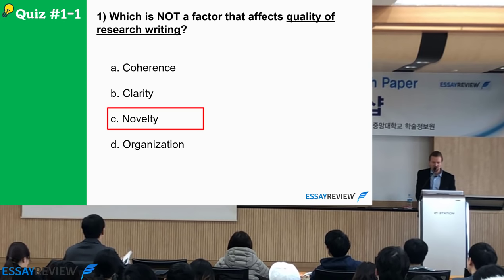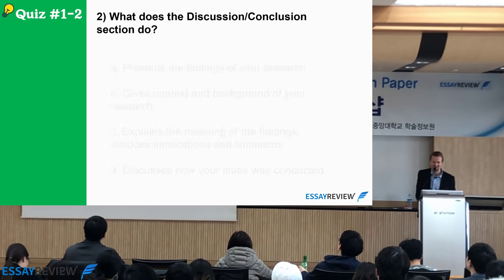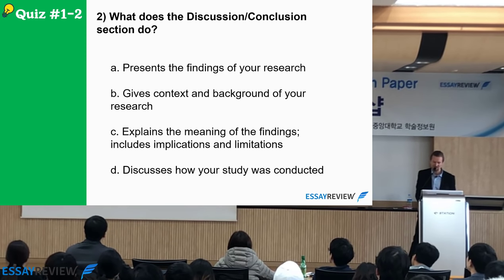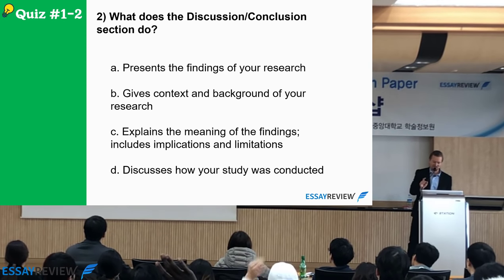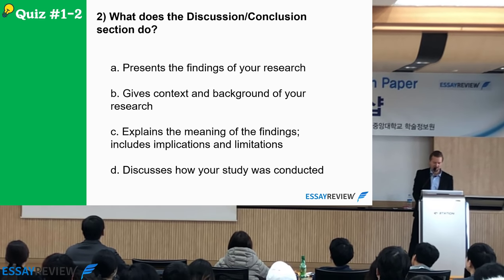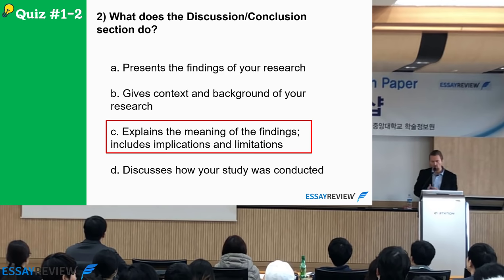Quiz two: what does the discussion/conclusion section do? A, presents the findings of your research; B, gives the context and background of your research; C, explains the meaning of the findings and includes implications and limitations; D, discusses how your study was conducted. The answer is C — the discussion explains the meaning of the findings. That's where you talk about why your study is important.